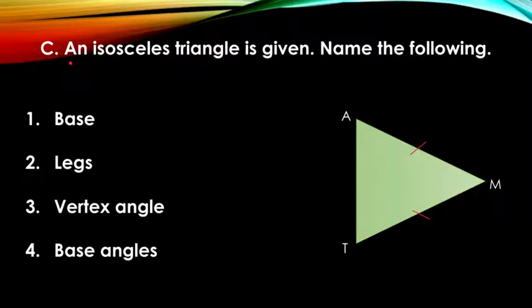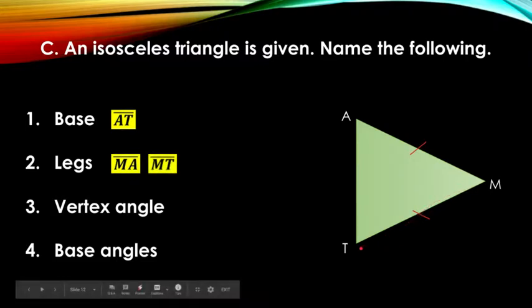Letter C. An isosceles triangle is given. Name the following. Which one is the base? Line AT. Of course, because the congruent legs are AM and MT. Line AM is the leg and the other leg is line MT. How about the vertex angle?